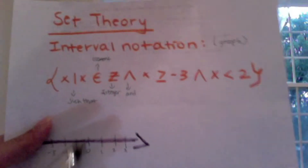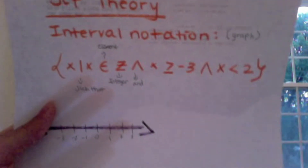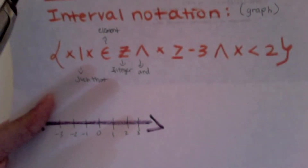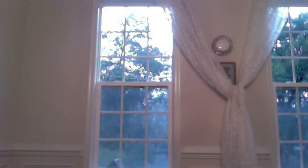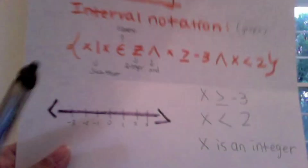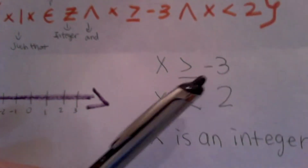We're asked to graph this on the number line and also to put it in interval notation. If we took this set builder notation apart and put it in a familiar form, this whole line basically means: X is greater than or equal to negative 3, and X is less than 2, and X is an integer.